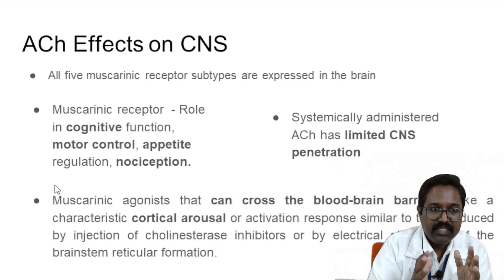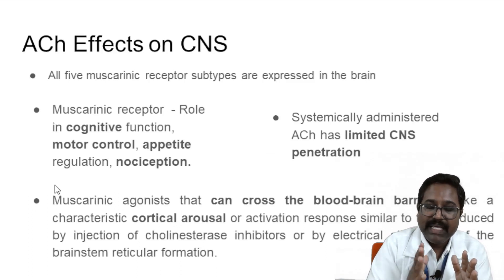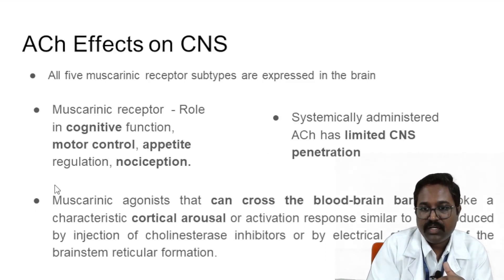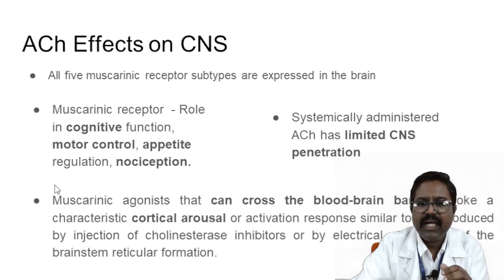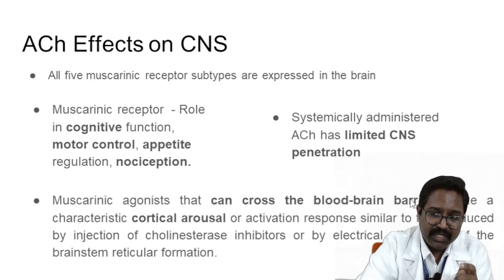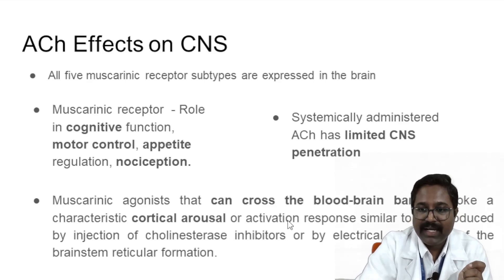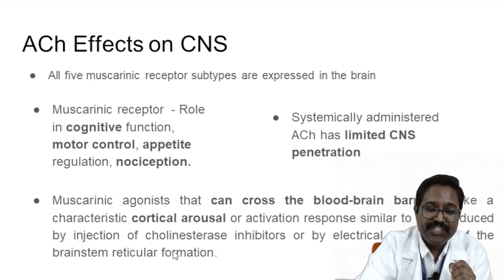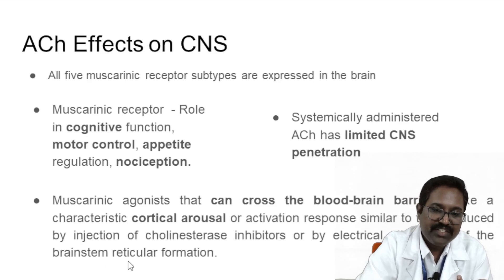The effect of acetylcholine on the CNS is that it improves cognitive function. The major roles of acetylcholine are to increase cognitive function, control motor functions, regulate appetite, and nociception. When acetylcholine is administered systemically, it has limited CNS penetration. Muscarinic agonists, however, can cross the blood-brain barrier and evoke cortical arousal or activation similar to electrical stimulation of the brain stem reticular formation.